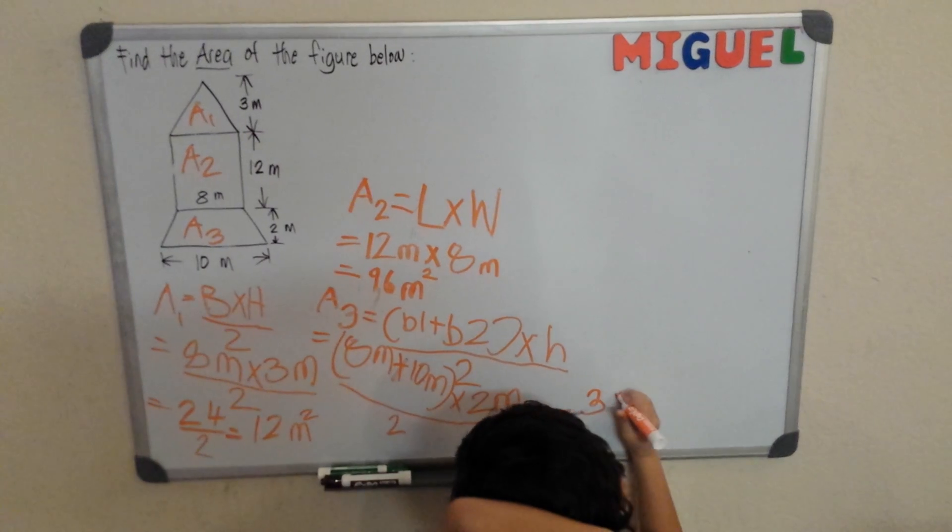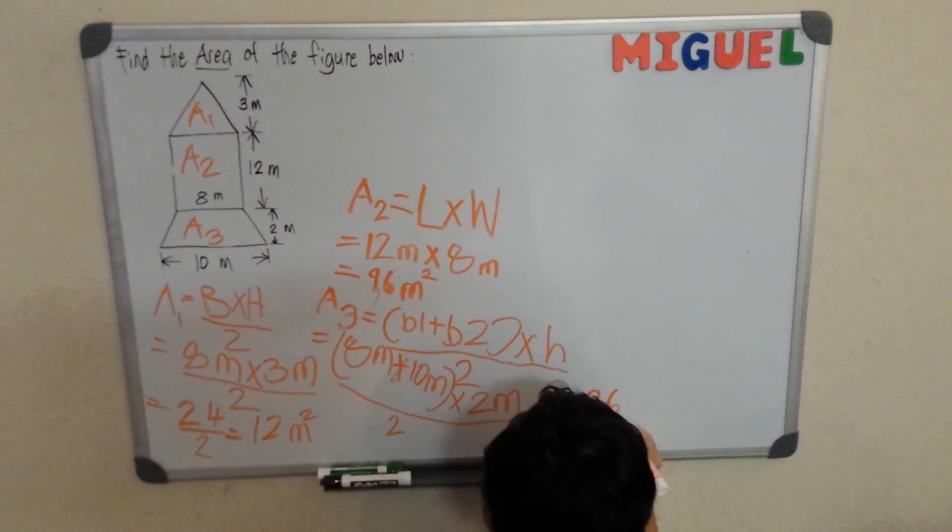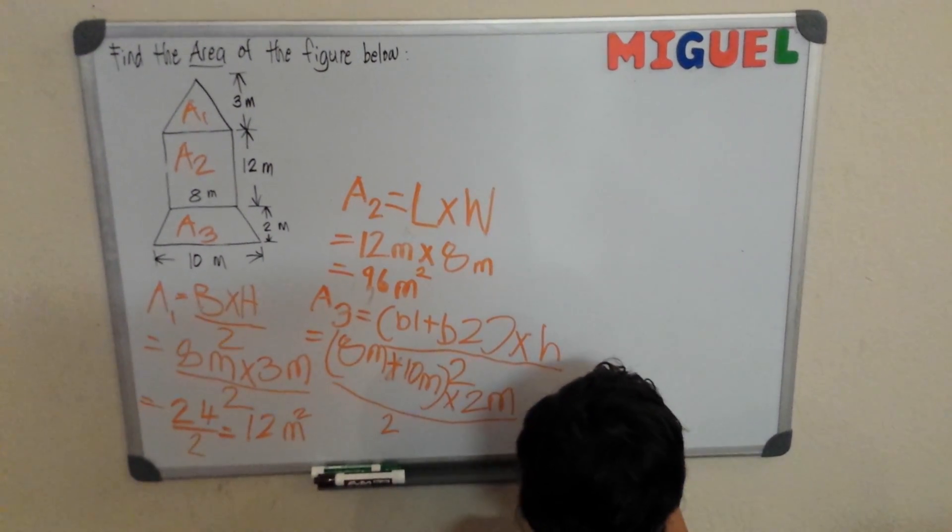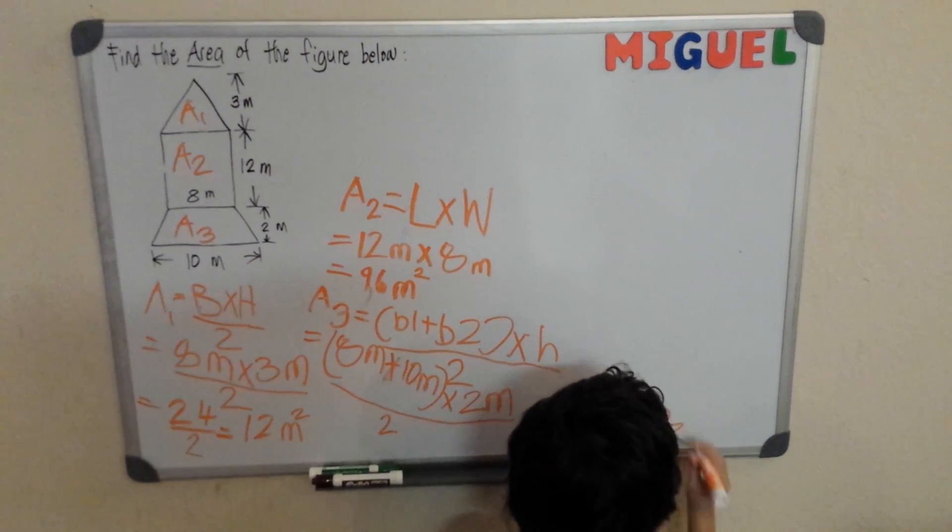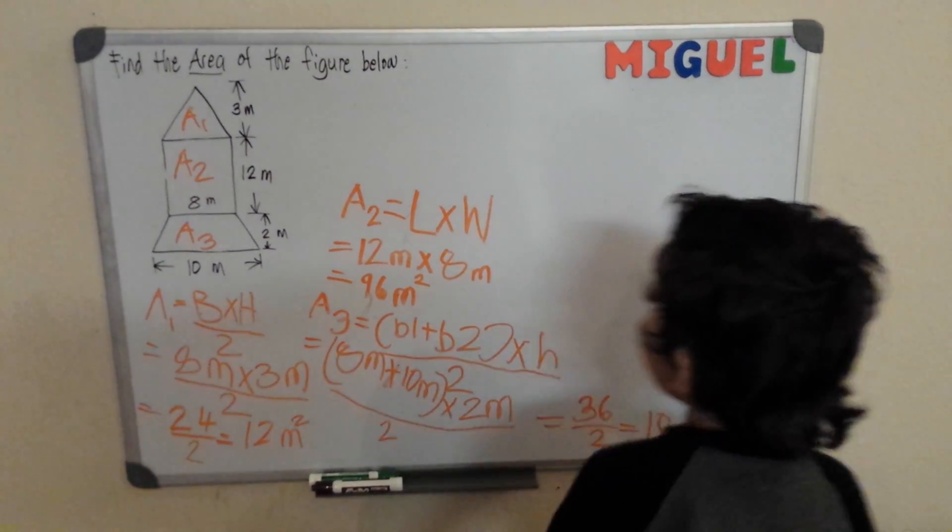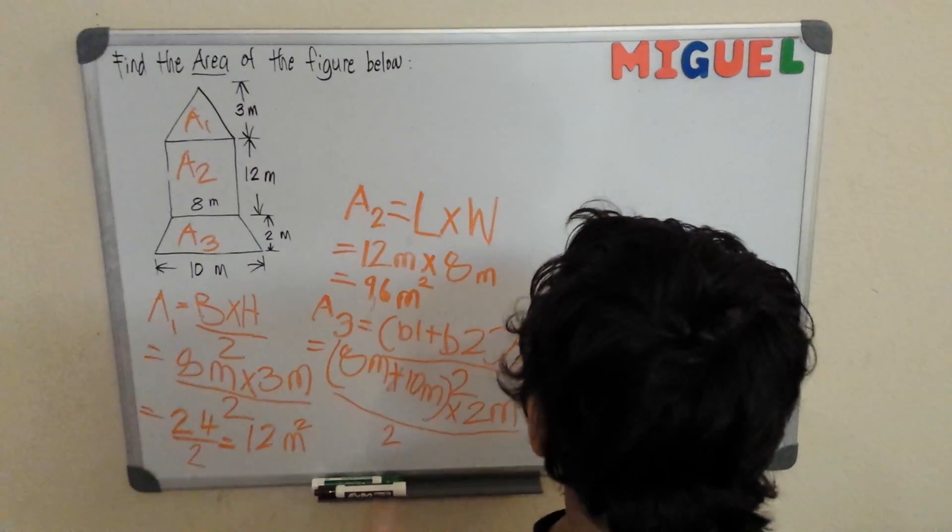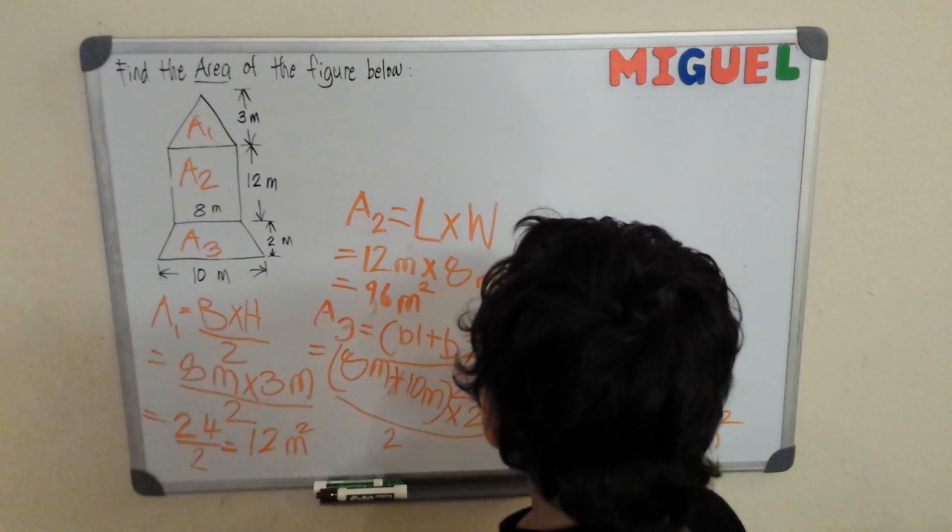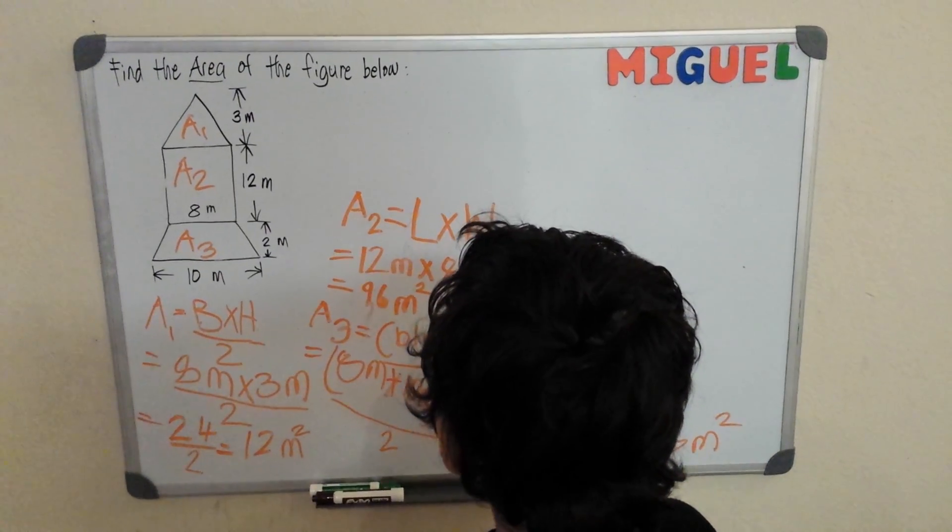36 divided by 2 equals 18 meters squared. Now I can get all of the area. Now I need to get the area of the rocket ship.